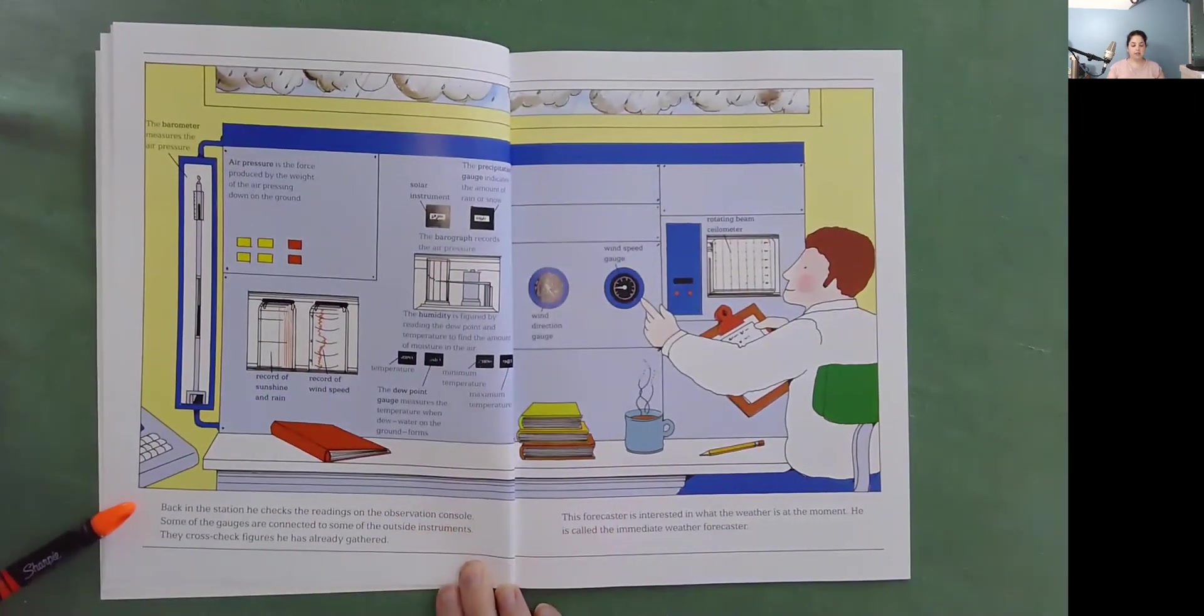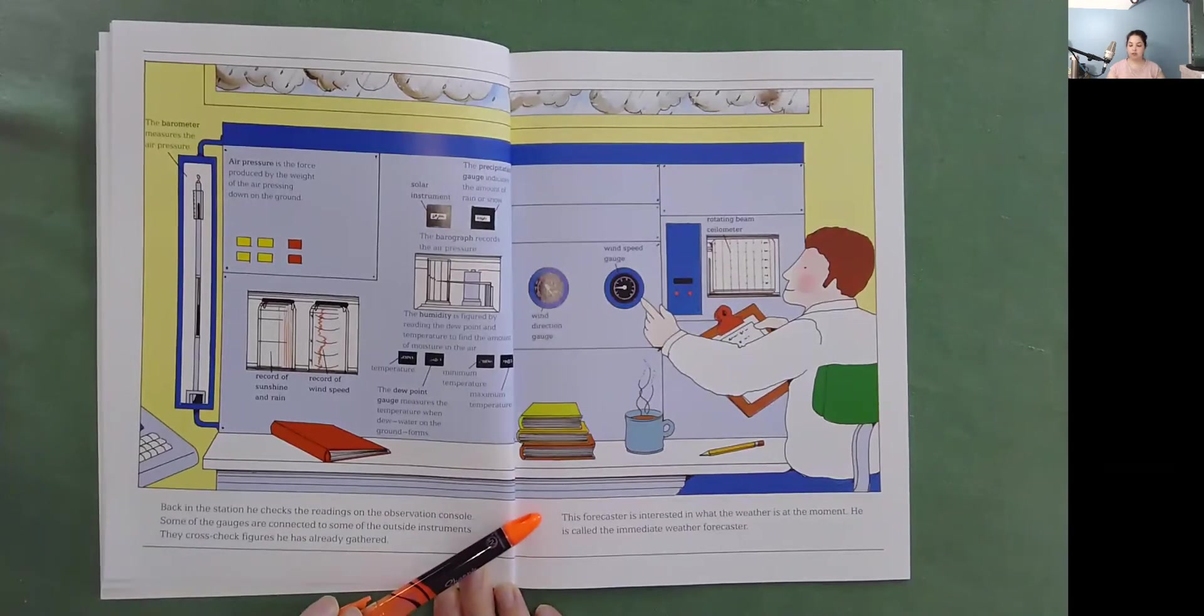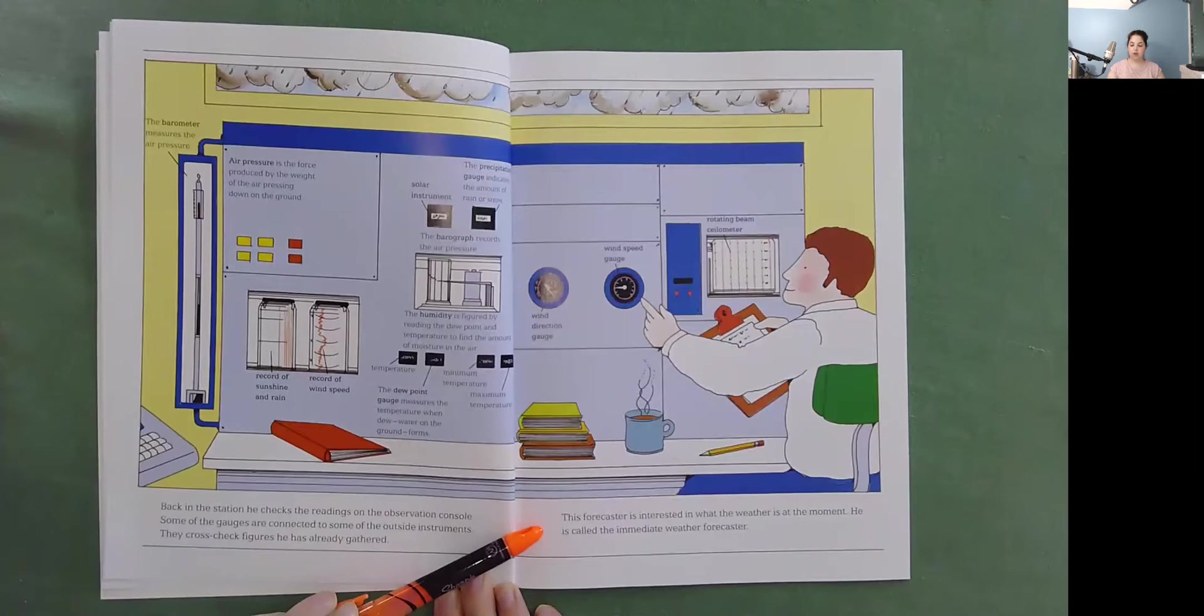Back in the station he checks the readings on the observation console. Some of the gauges are connected to some of the outside instruments. They cross-check figures he has already gathered. This forecaster is interested in what the weather is at the moment. He is called the immediate weather forecaster.